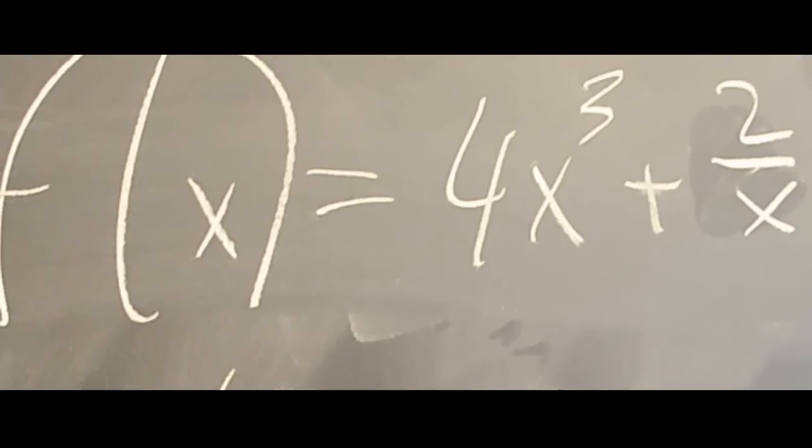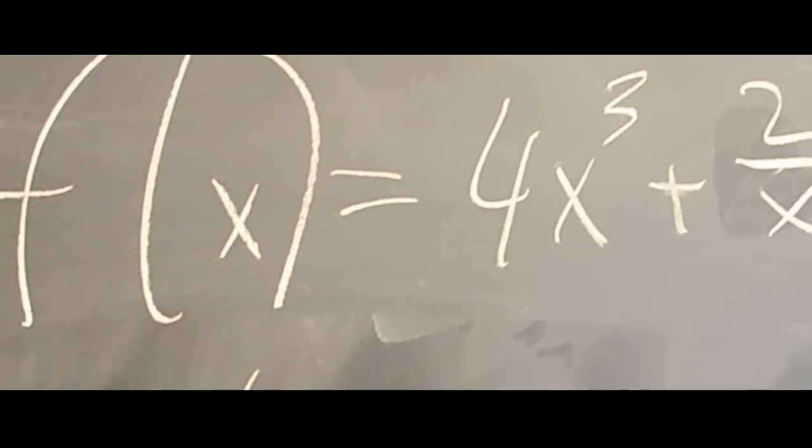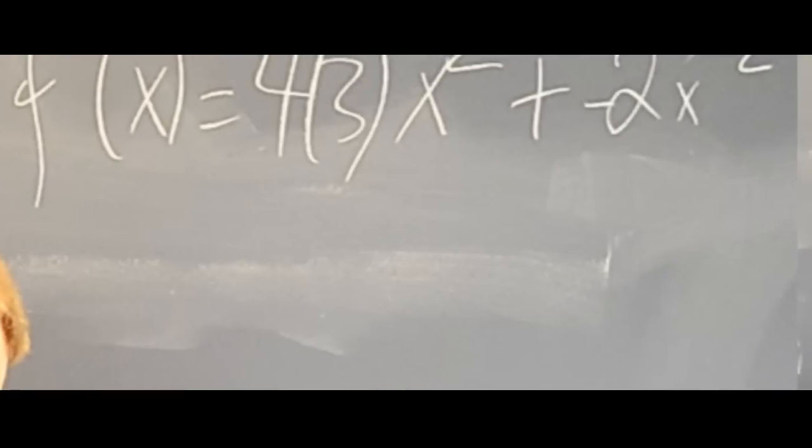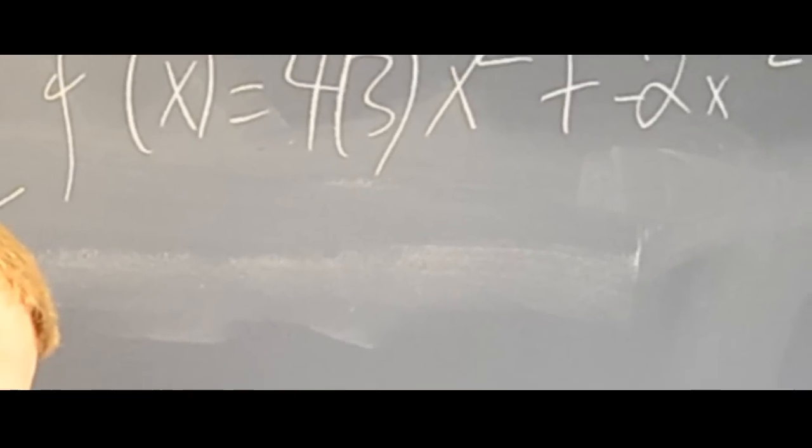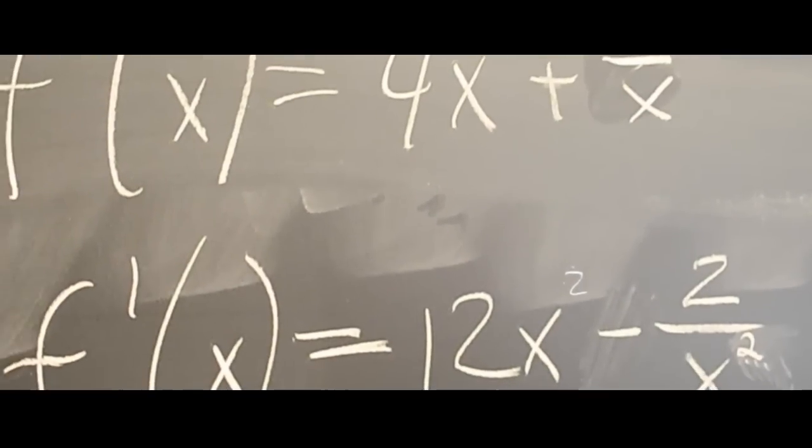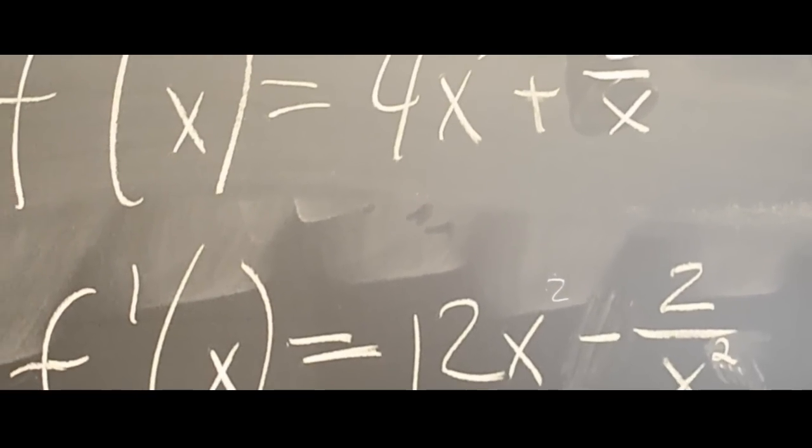Not exactly. First we create the equation y equals 4x to the third plus 2 over x. We change each part into a derivative and then we add it. And then it becomes y prime equals 12x squared minus 2 over x squared.